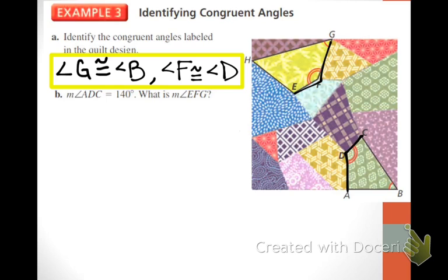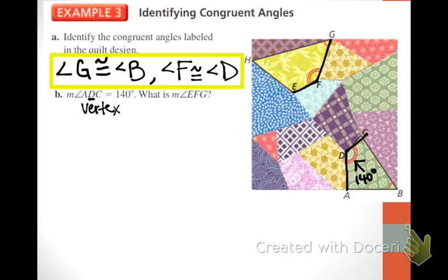And then the angles with two arcs: angle F is going to be congruent to angle D. Now, the measure of angle ADC — this little M means measure. The vertex of ADC is D, which is the corner of the angle, so we're talking about this angle. It has two arcs. If it is 140 degrees, we find the other angle — EFG also has two arcs. So if the measure of ADC is 140, the measure of EFG is also 140. You write: measure of angle EFG equals 140.